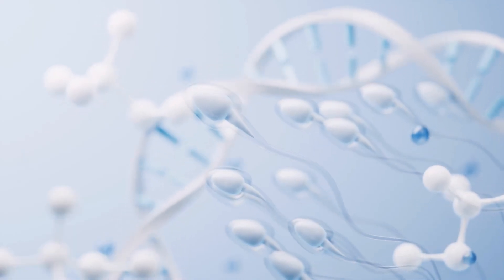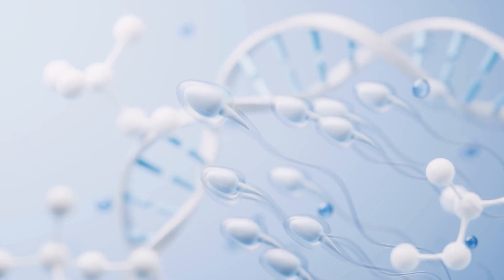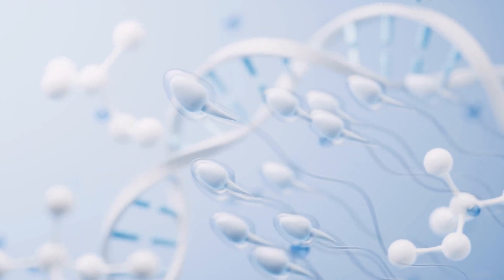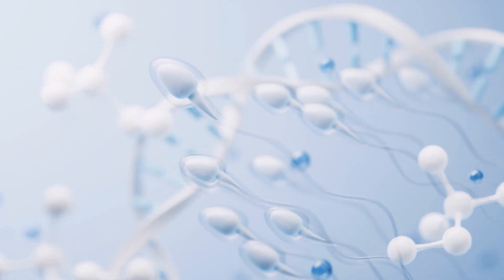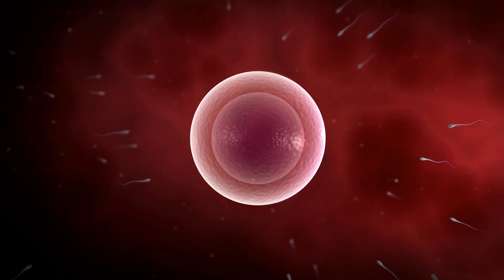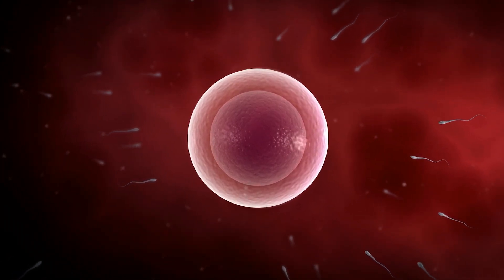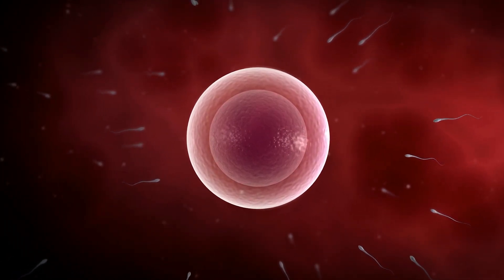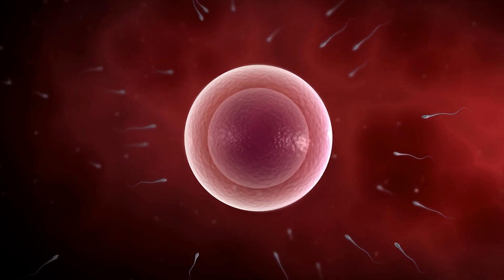The reason your fertile window is about seven days is because sperm can live in the female reproductive tract for up to five days. However, once you ovulate and release an egg, that egg only has a lifespan of about 12 to 24 hours. If the egg is not fertilized within that 12 to 24 hour window, it will die off and your body will start to plan for your next period.